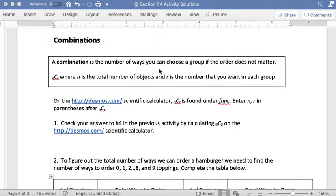A combination is the number of ways you can choose a group if the order does not matter. We have a notation for this, which is nCr. We have capital C in the middle and the n and the r here are subscripts and also lowercase. n is the total number of objects, r is the number that you want in each group. So n is the total number that you're taking from and then you're making smaller groups of size r.